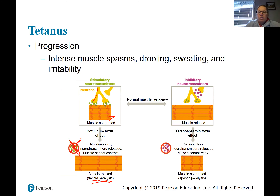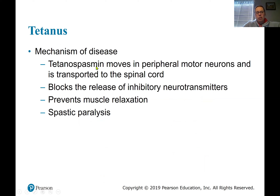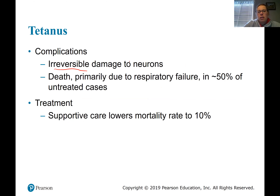So botulinum toxin prevents muscles from contracting, whereas tetanospasmin blocks the signal telling muscles to relax — so the muscles just keep contracting and can't relax. This causes intense muscle spasms, drooling, sweating, and other uncomfortable symptoms. It can cause paralysis and irreversible damage to neurons. In untreated cases there is a 50% mortality rate; even with supportive care tetanus has a 10% mortality rate. It is a very serious disease.